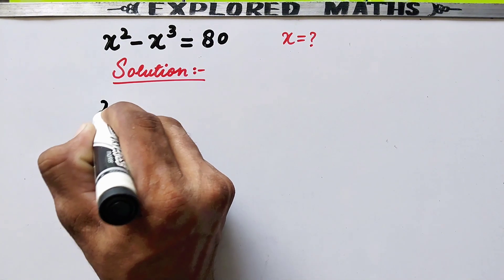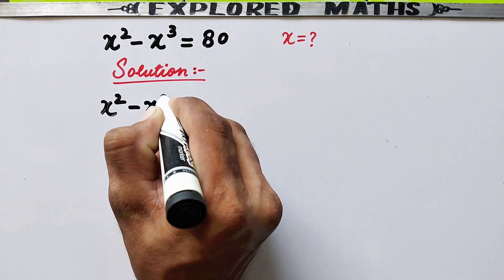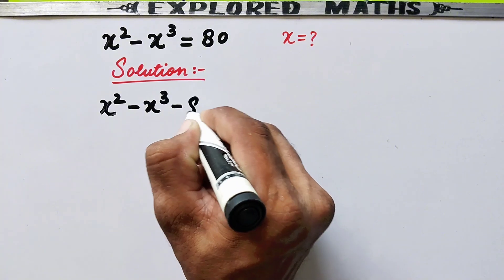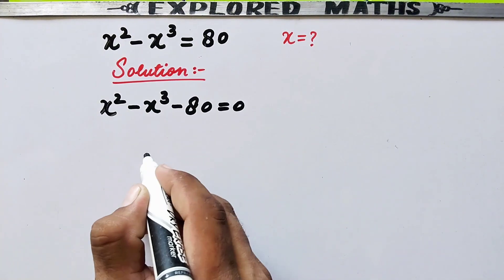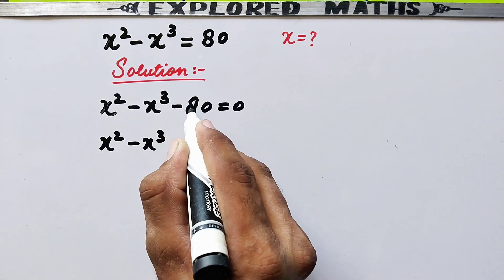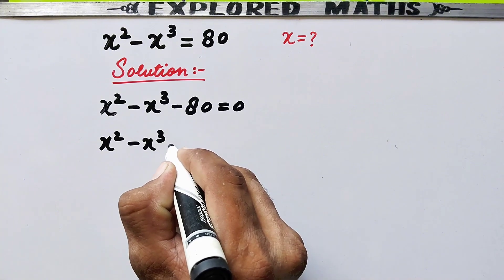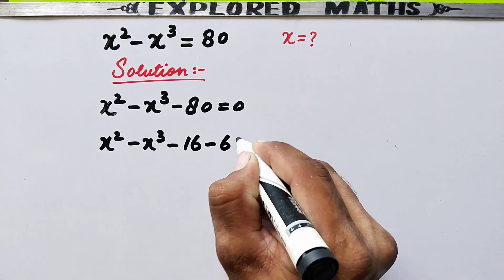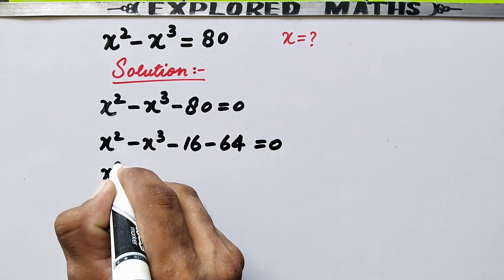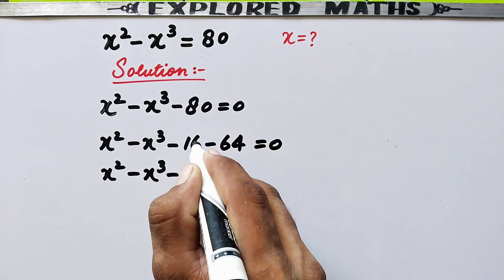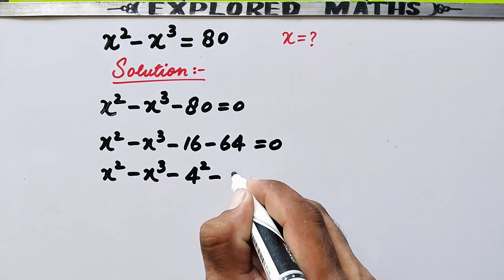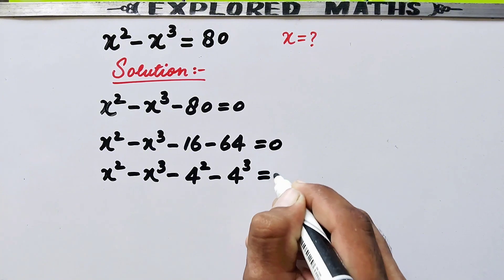In the first step we will write it as: x squared minus x cubed, taking this value to the left hand side it will be minus 80 equal to zero. Now x squared minus x cubed, this minus 80 can be separated as minus 16 minus 64, equal to zero. So x squared minus x cubed minus 16, where 16 is the same as 4 squared, and minus 64, which is the same as 4 cubed, equal to zero.